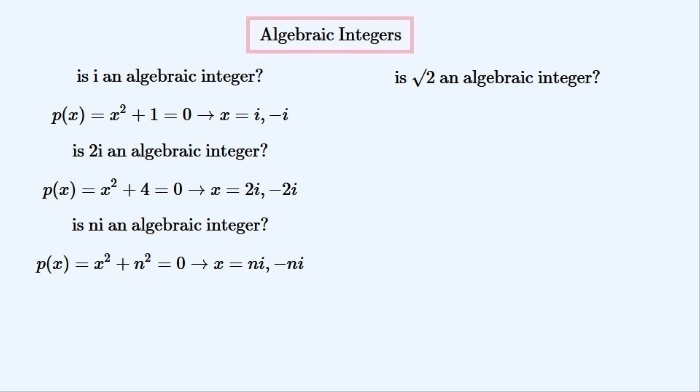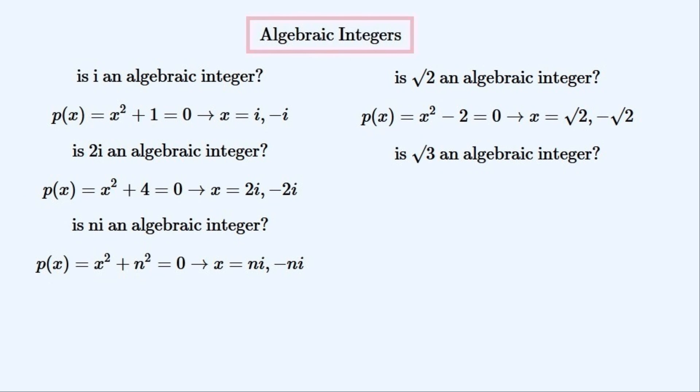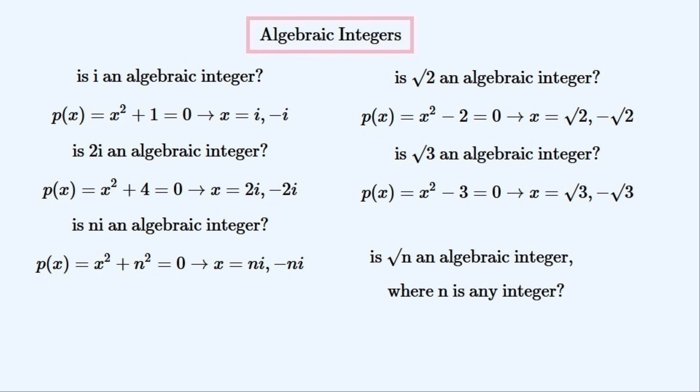Let's look at the irrational number root 2. Is this an algebraic integer? Yes it is, because x squared minus 2 is the monic polynomial that it's a root of. We can show that the square root of 3 is an algebraic integer in a similar way, by constructing a monic polynomial which it is a root of. And we can show that the square root of any integer is an algebraic integer by constructing a more generalized monic polynomial in a similar way.